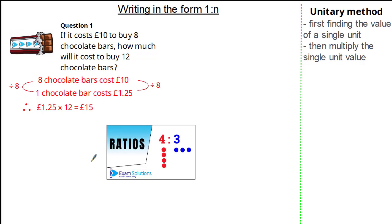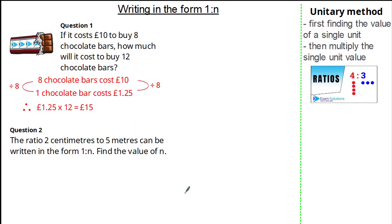Before moving on, you may need to remind yourself of those key features of ratio using our ratios video. This will help you with the next exam question. In this exam question it states the ratio 2cm to 5m can be written in the form of 1 to n, and we're asked to find the value of n.